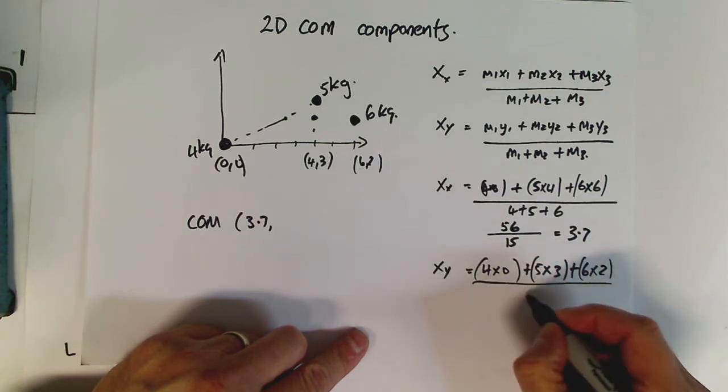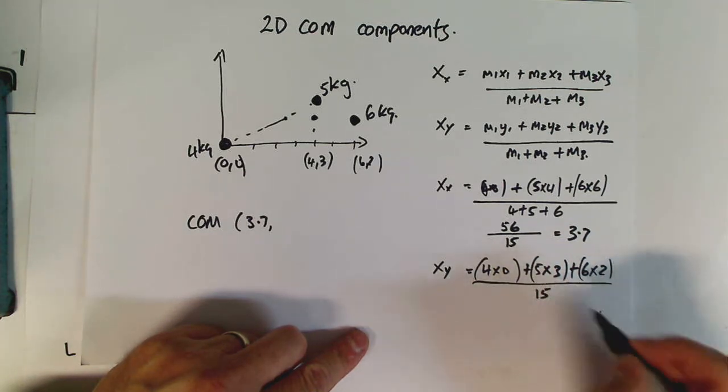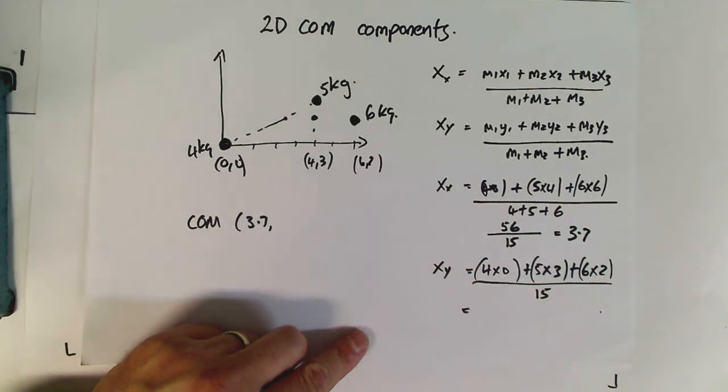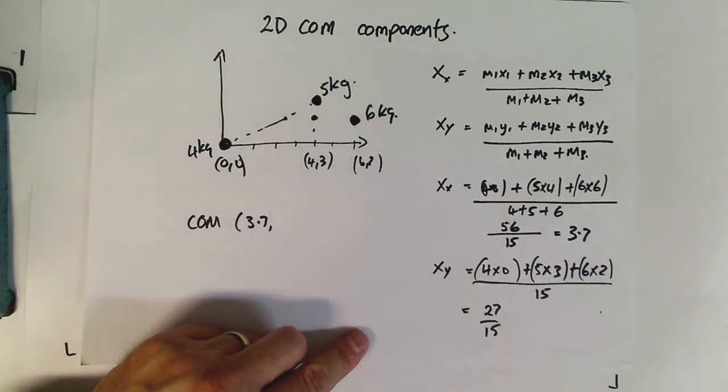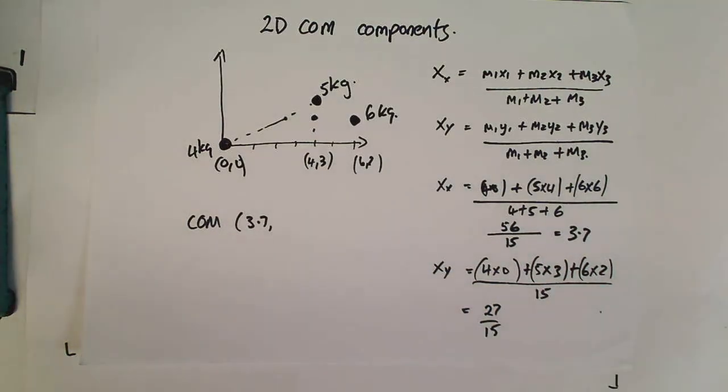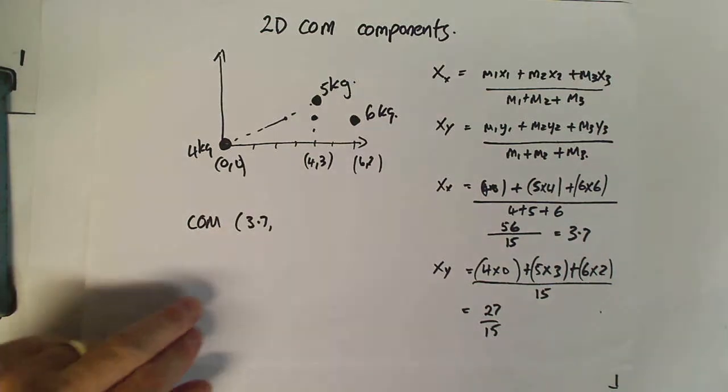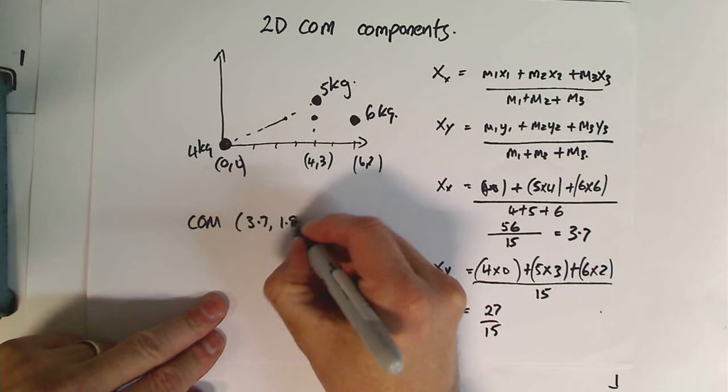Same old numbers on the bottom, 4 and 5 and 6. So, we end up with a component, which is 12 and 15, or 27 divided by 15. Do that on our calculator, and we end up with 1.8. So, our y component is 1.8.